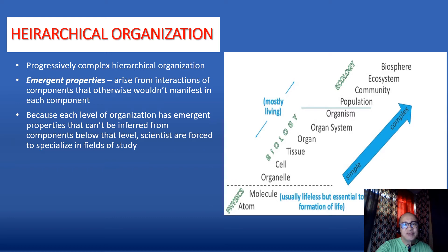Animals demonstrate progressively complex hierarchical organization from the smallest component, the atomic level, to the largest level, the biosphere. Each level builds up from the level below it. The levels of hierarchical organization include the atom, molecule, organelle, cell, tissue, organ, organ system, organism, population, community, ecosystem, and the biosphere.